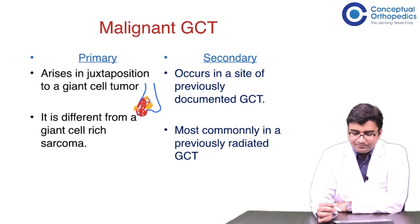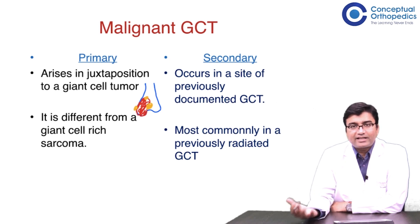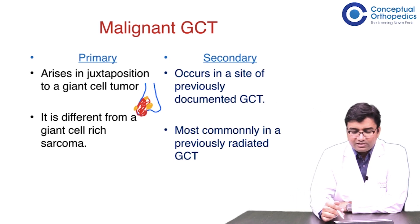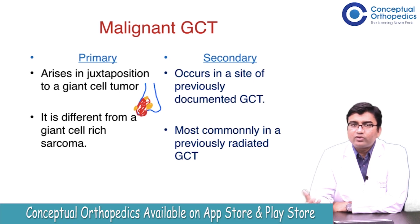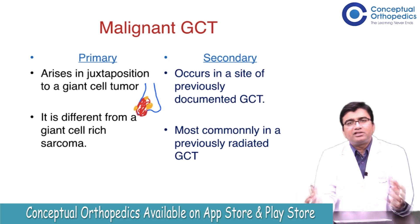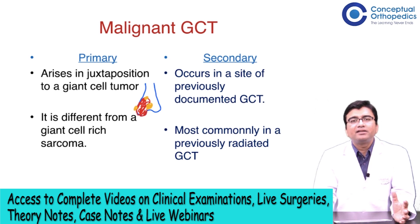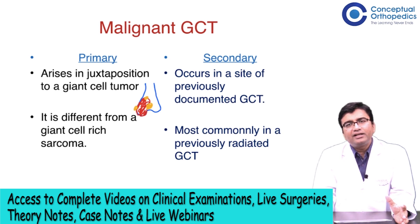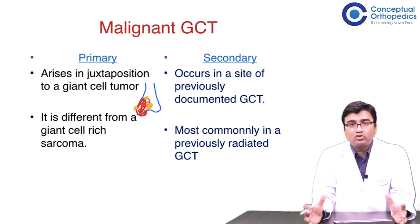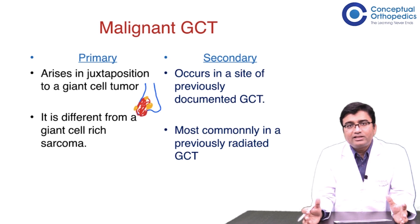Secondary malignant GCT is when it has occurred secondary to a pre-existing GCT. For example, cases from 20-25 years ago where GCT was operated 30-35 years back and radiotherapy was also given at that time — now presenting with recurrence at the same site. That is a secondary sarcoma arising at the site of a previous GCT, i.e., secondary malignant GCT. In these situations, we have to treat them like a sarcoma.